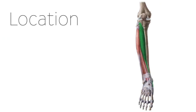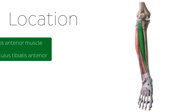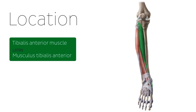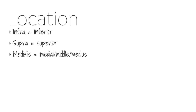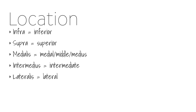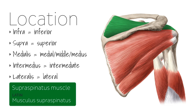Finally, some muscles are named according to their location in the body. For example, the tibialis anterior muscle is located in front of the tibia. Some muscles also derive their names after their position or location in reference to a similar muscle. In this case, the following terms are used: infra or inferior meaning below or more caudally situated; supra or superior meaning above or more cranially located; medialis, medial, middle, or medius meaning closer to the midline; intermedius meaning intermediate; and lateralis or lateral meaning to the side or away from the midline. An example would be the supraspinatus muscle, which is the more superiorly situated of the two spinatus muscles of the scapula.